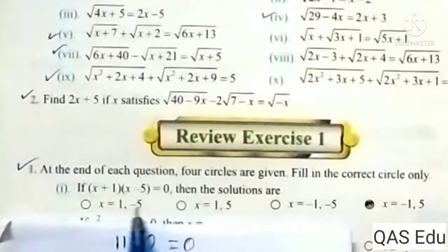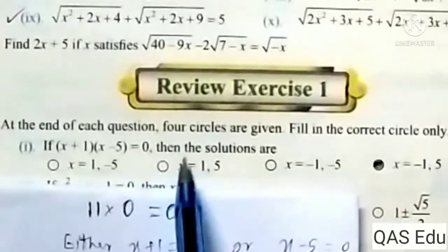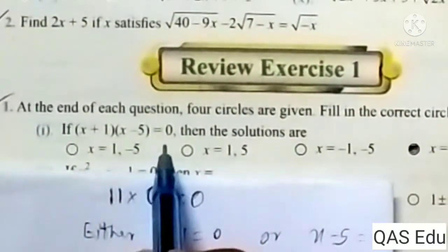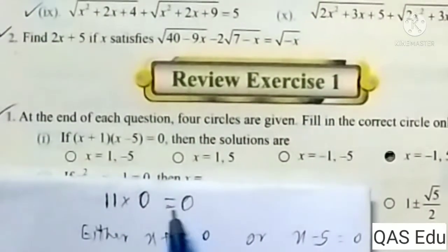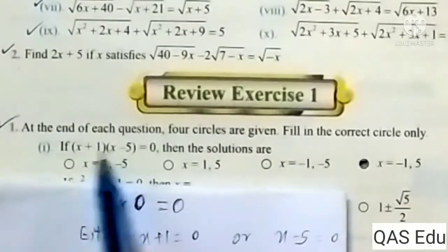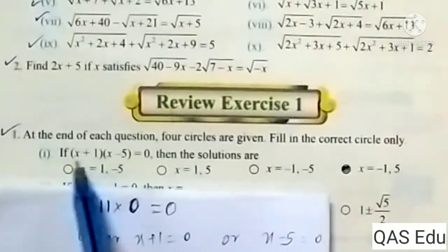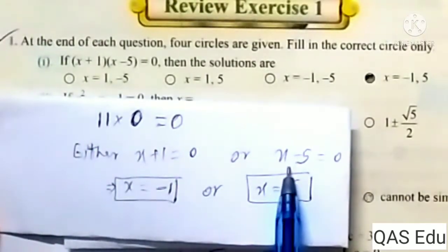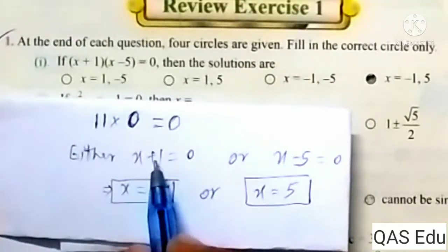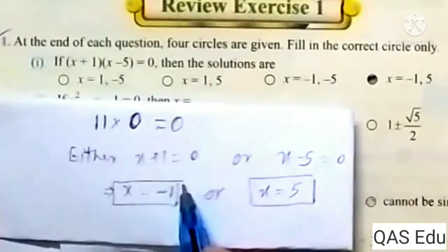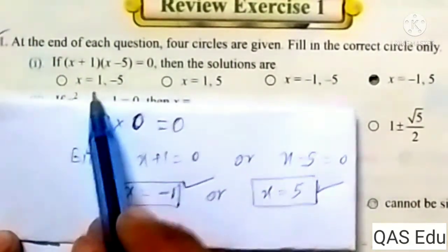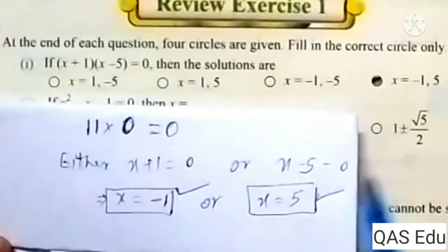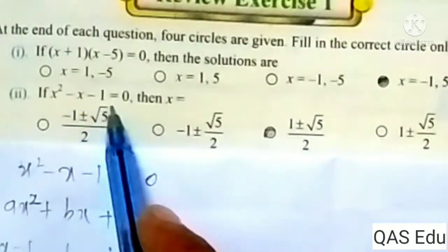If x plus 1 into x minus 5 is equal to 0, then the solutions are. So the problem is: if x plus 1 is equal to 0, then x is equal to minus 1. If x minus 5 is equal to 0, then x is equal to 5.